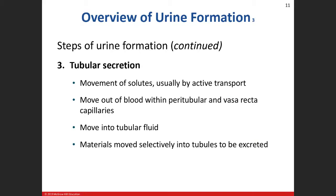The last process is tubular secretion - this is active transport, meaning we are going to be utilizing energy - ATP. This is what happens when we move stuff out of the peritubular capillaries and the vasorecta back into the tubular system, and then eventually we're going to excrete that material. Those are our three processes: filtration, resorption, secretion.